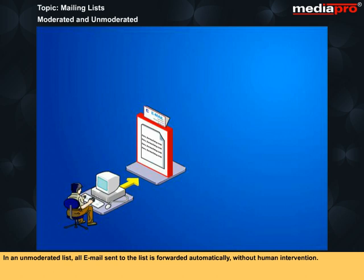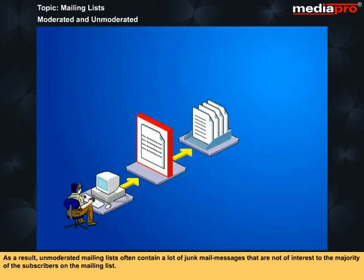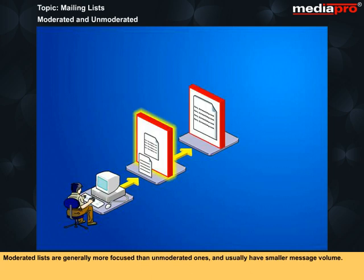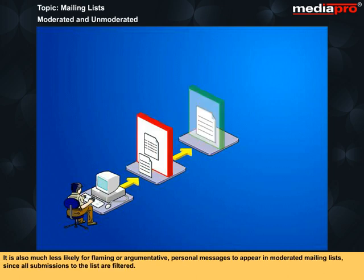In an unmoderated list, all email sent to the list is forwarded automatically without human intervention. As a result, unmoderated mailing lists often contain a lot of junk mail messages that are not of interest to the majority of the subscribers on the mailing list. In a moderated list, the mail is first screened by a human moderator and is forwarded only if it is considered appropriate for the subscribers. Moderated lists are generally more focused than unmoderated ones and usually have smaller message volume. It is also much less likely for flaming or argumentative personal messages to appear in moderated mailing lists since all submissions to the list are filtered.